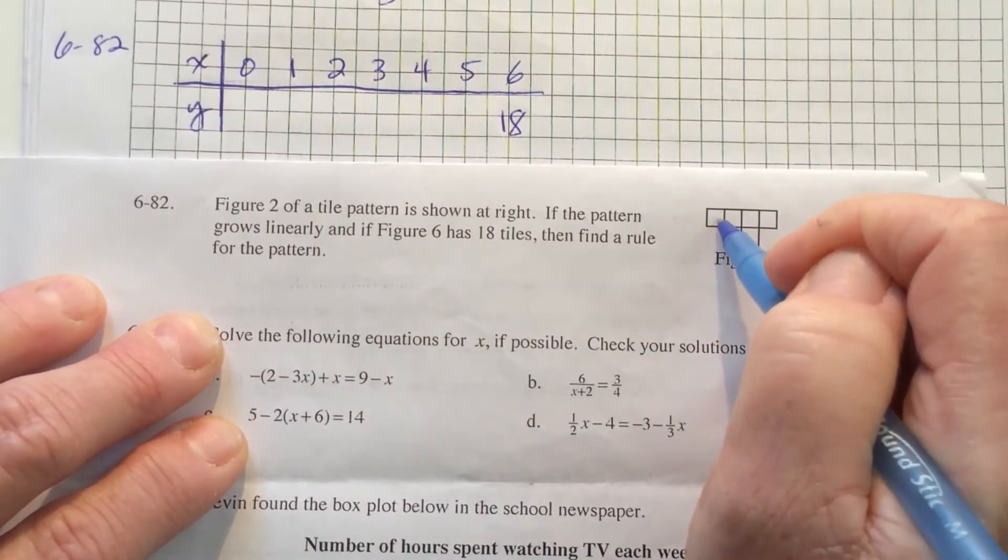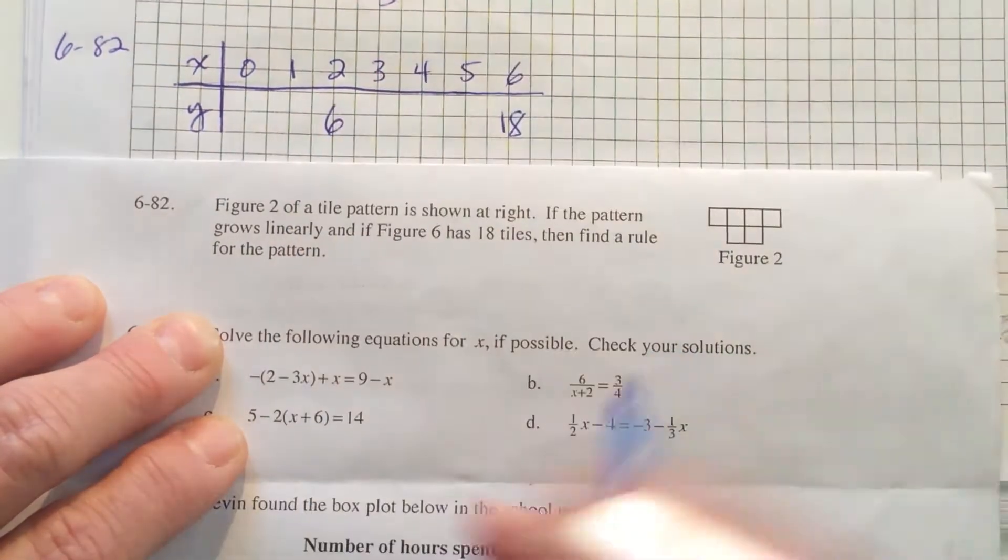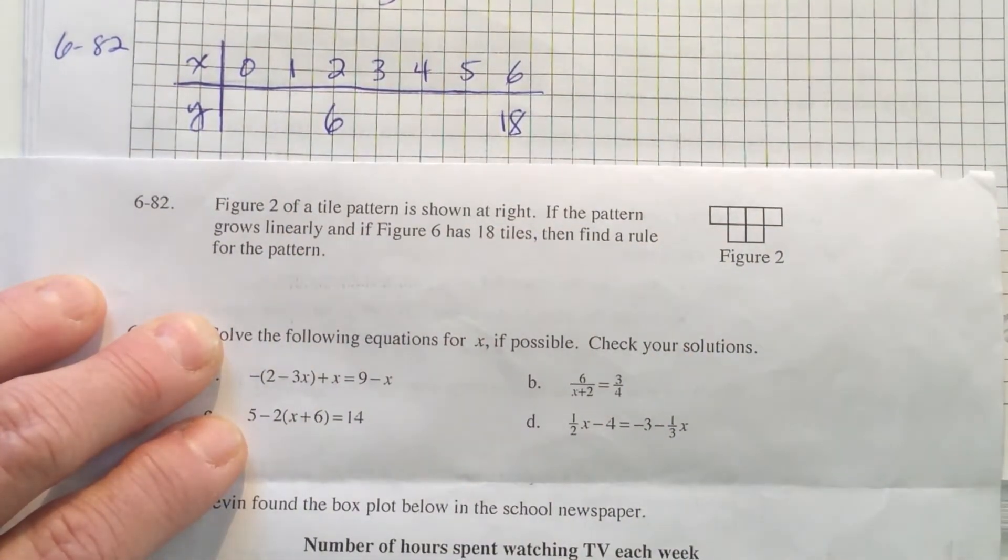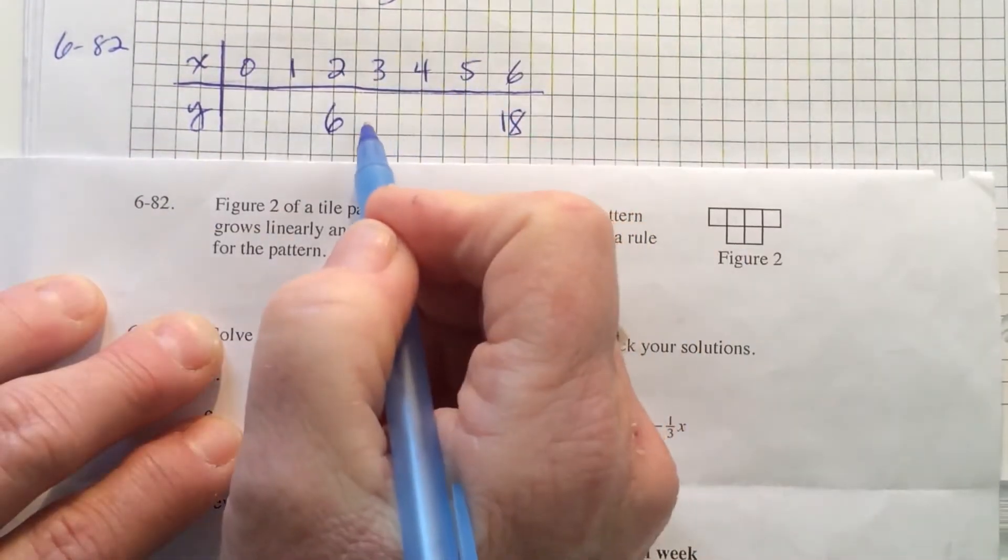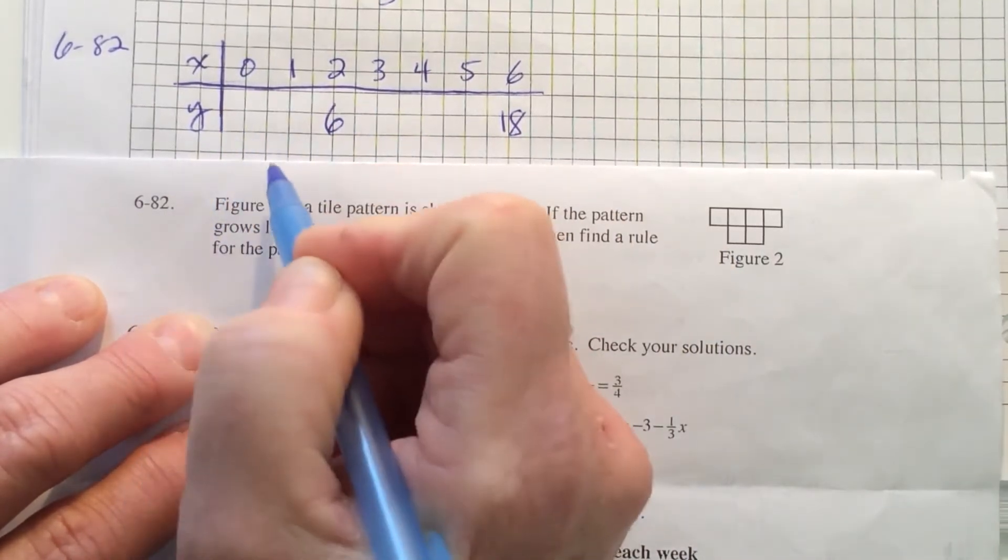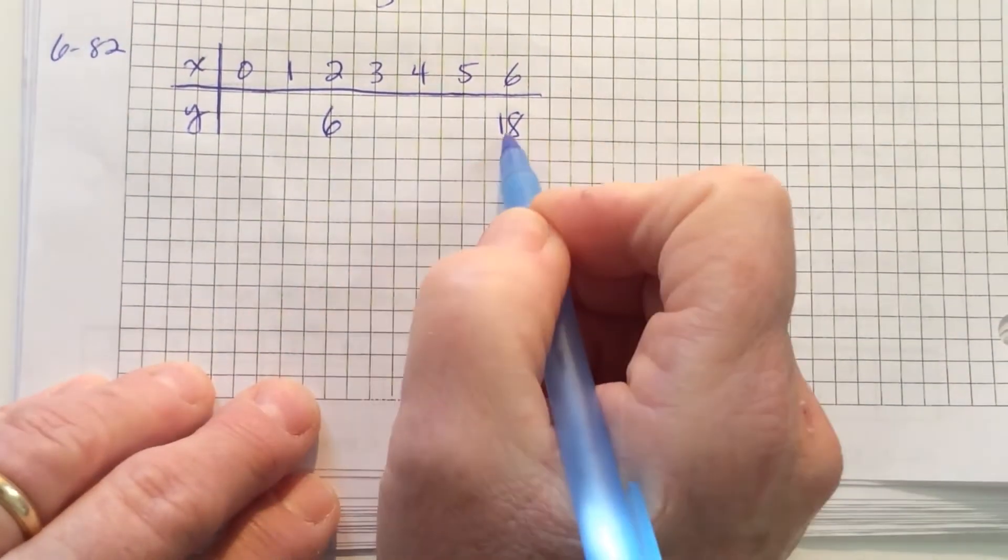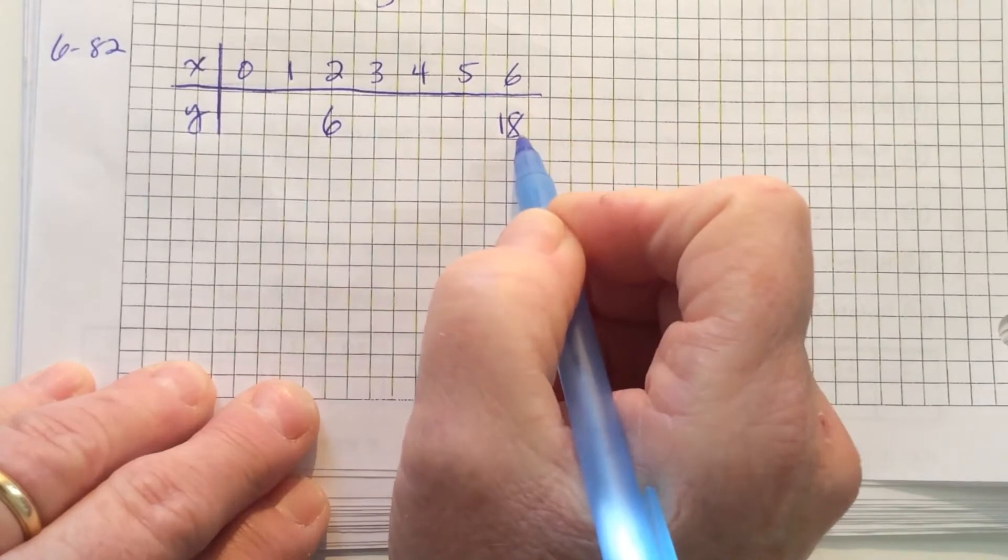Figure 2 has 1, 2, 3, 4, 5, 6 tiles. So now we need to figure out what's in between here, and then work backwards to find figure 0. Between 6 and 18, it goes up 12.